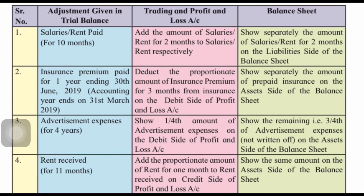Next: rent received for 11 months. This is income which is receivable — you are supposed to receive rent for 12 months but have received only for 11 months. So calculate rent for 1 month, and that will be added to rent received in the profit and loss account credit side. The second effect: you are going to receive it, so it goes to the balance sheet asset side.